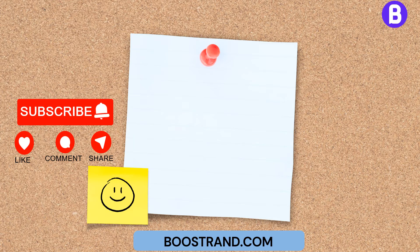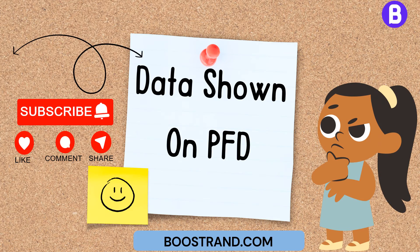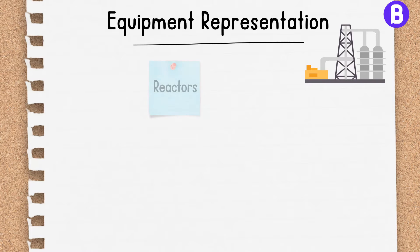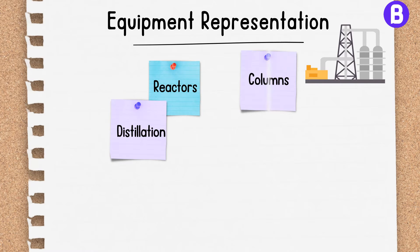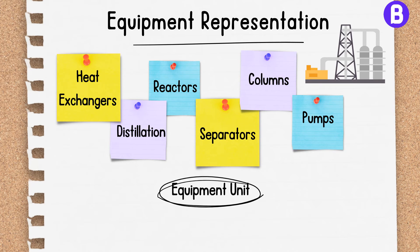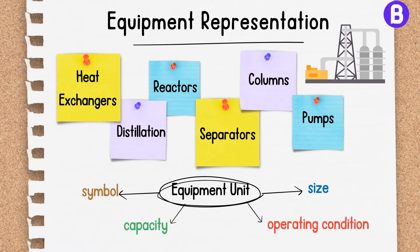A process flow diagram provides a comprehensive view of the major equipment units involved in a process. For instance, in a chemical manufacturing plant, the PFD may include reactors, distillation columns, pumps, heat exchangers, and separators. Each equipment unit is represented by a unique symbol on the PFD, accompanied by relevant information such as size, capacity, and operating conditions.